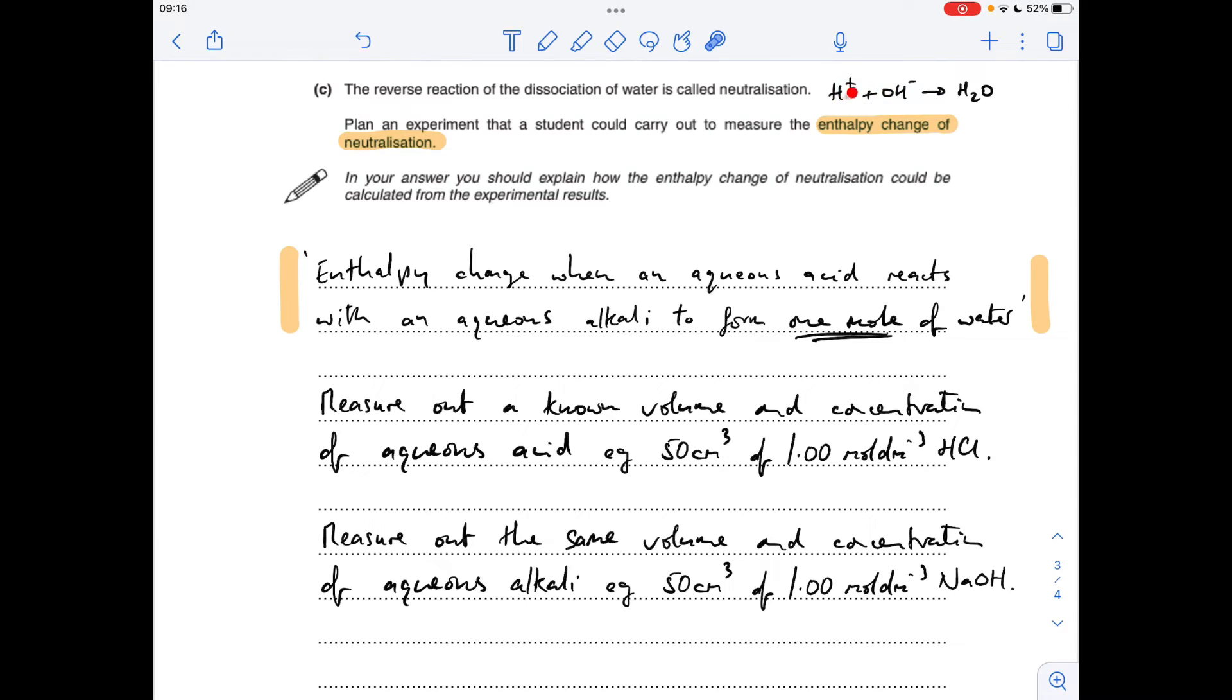So if we look at the equation that's taking place, obviously the HCl is providing the H plus ions, we want to take the same volume and concentration of aqueous alkali. They're going to provide the OH minus ions, so that we're keeping the moles of these the same. So you can see I've written up there, we're going to use 50 cm cubed of 1 mole per decimetre cubed sodium hydroxide.